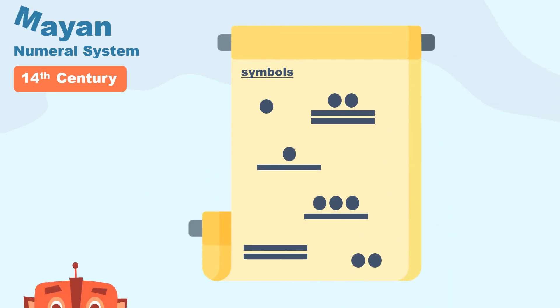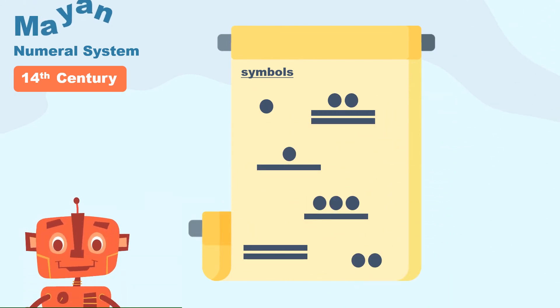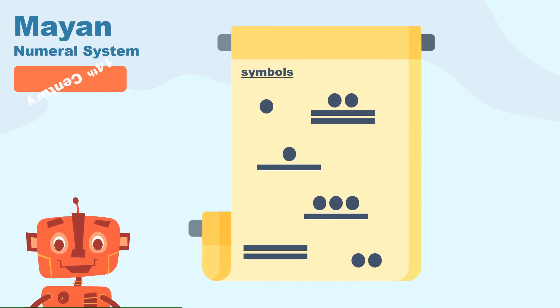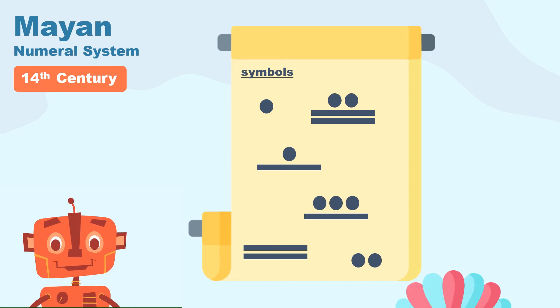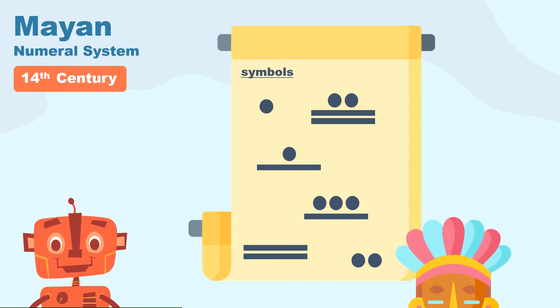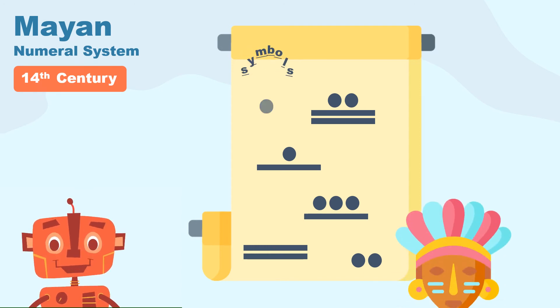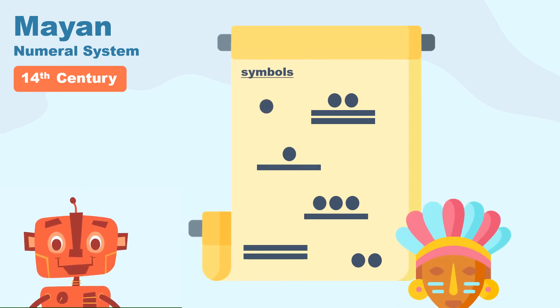The Mayan numeral system appeared around the 14th century and was created and used by the Mayans. They used the dot, bars, and upside-down turtle symbols to represent numbers.